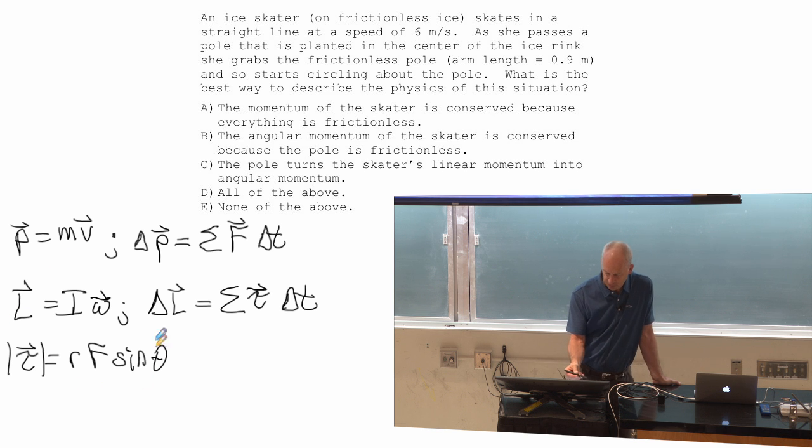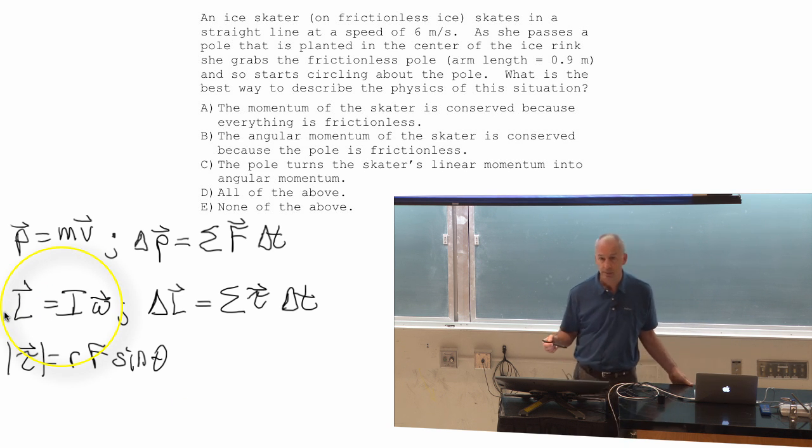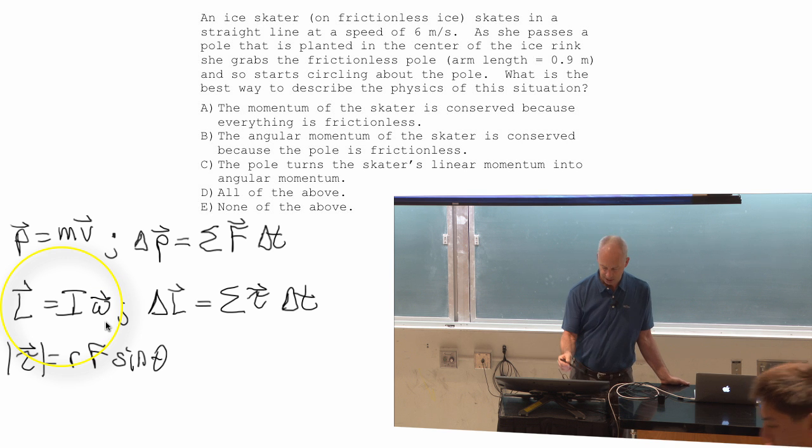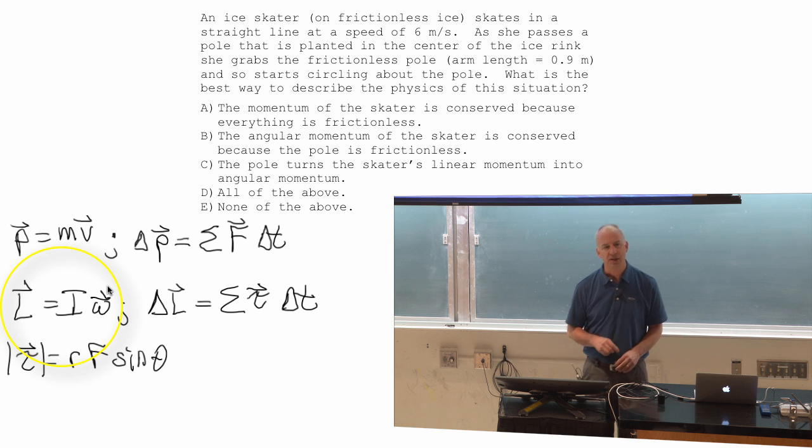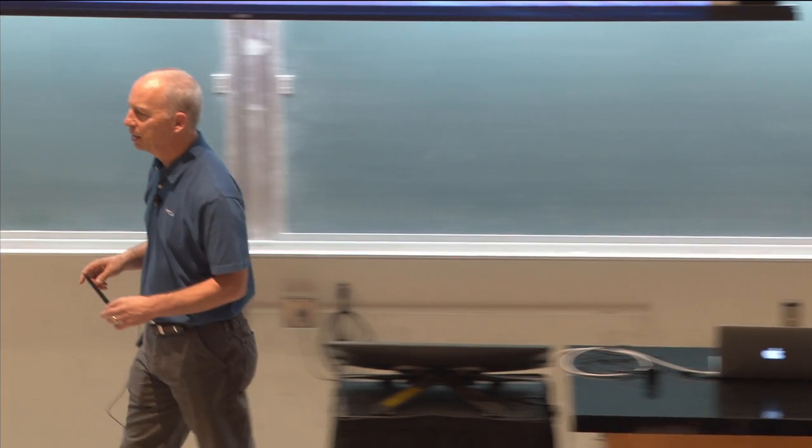But since we also have rotations as one of the possibilities, we've added in an analogous but new set of ideas to take care of rotational motion. So we defined the angular momentum or rotational momentum to depend on the angular speed. That's the little Greek letter omega with a vector over it. And the right-hand rule tells us how to find the direction of the angular speed.